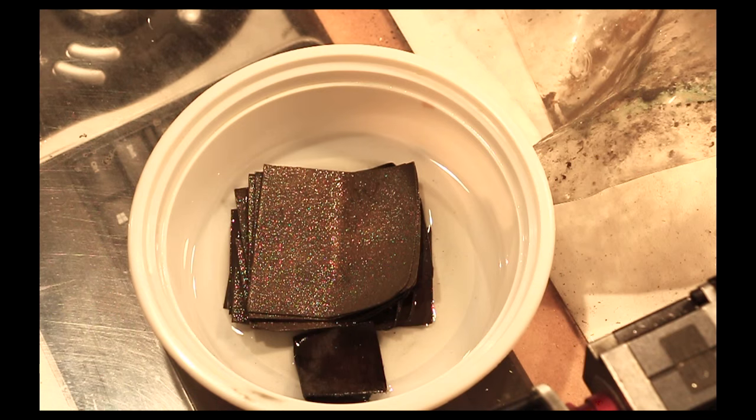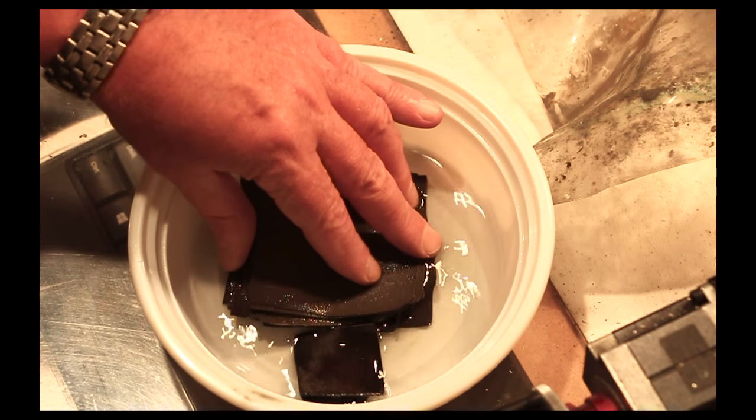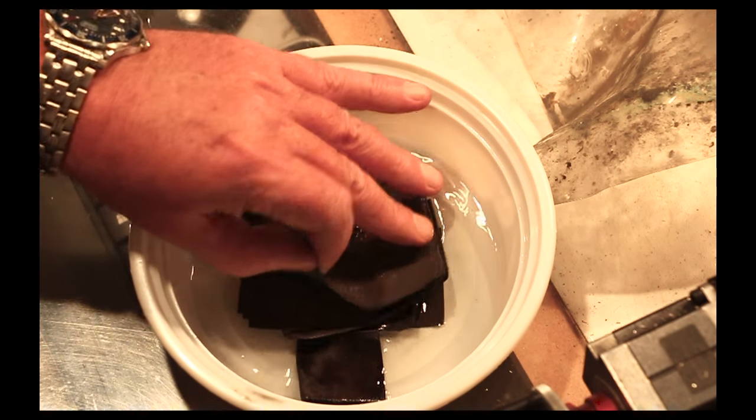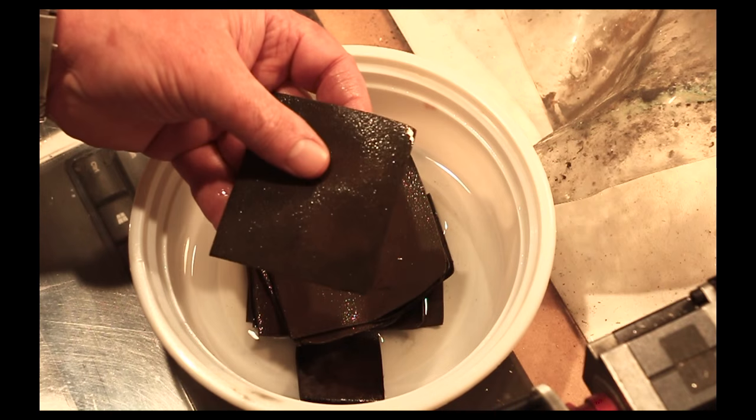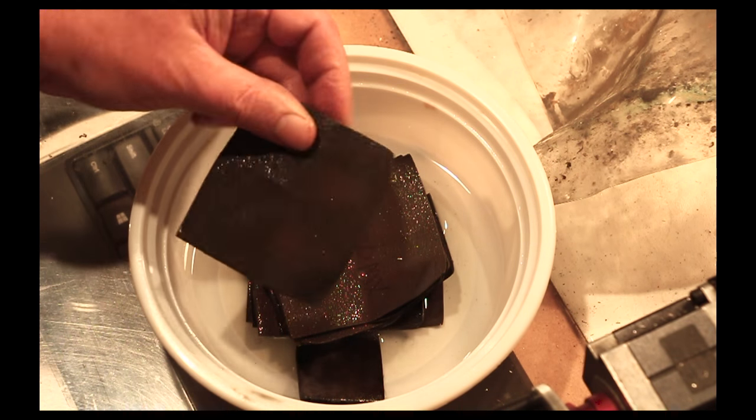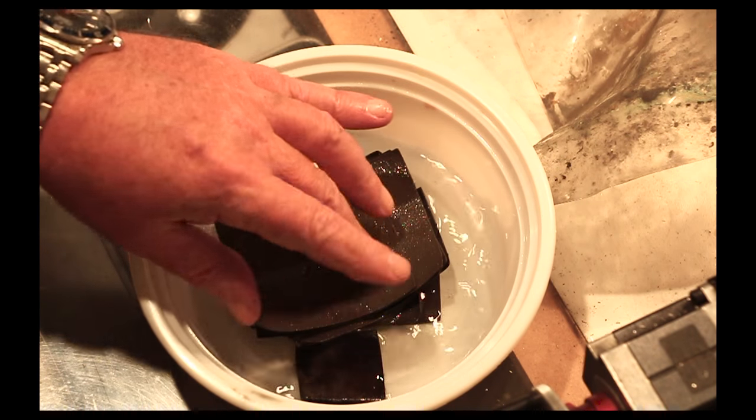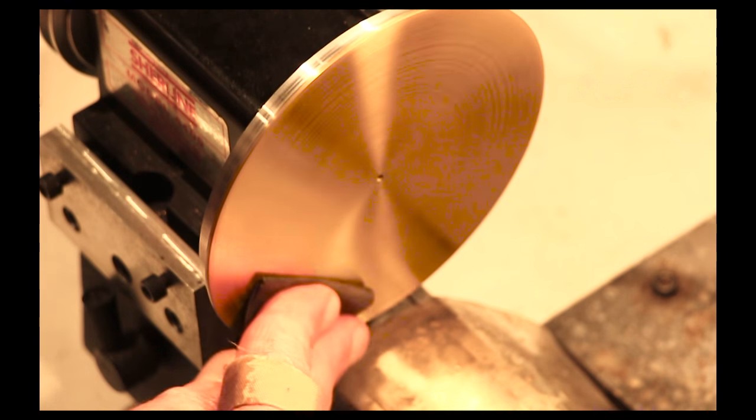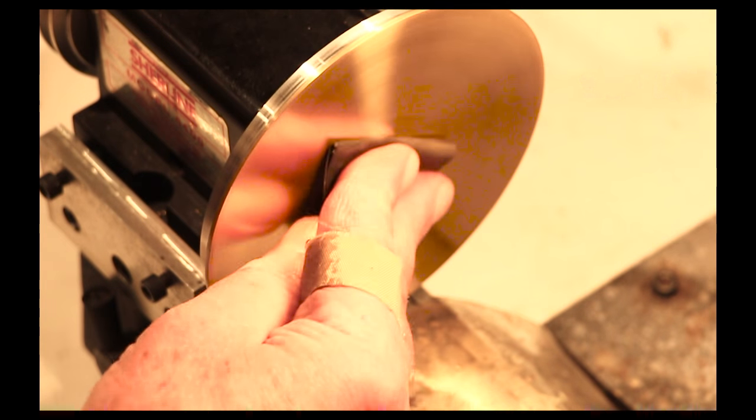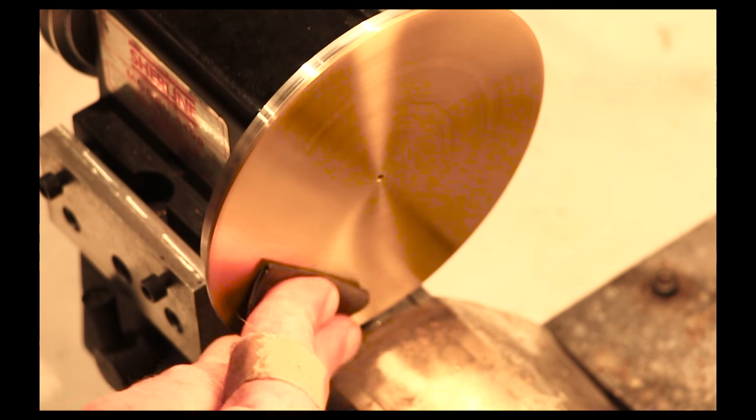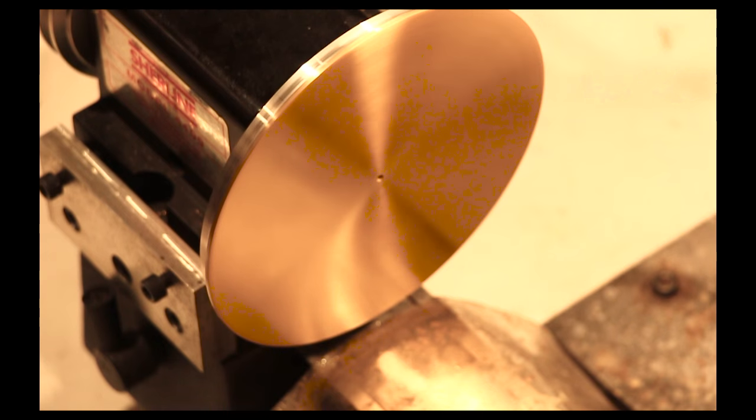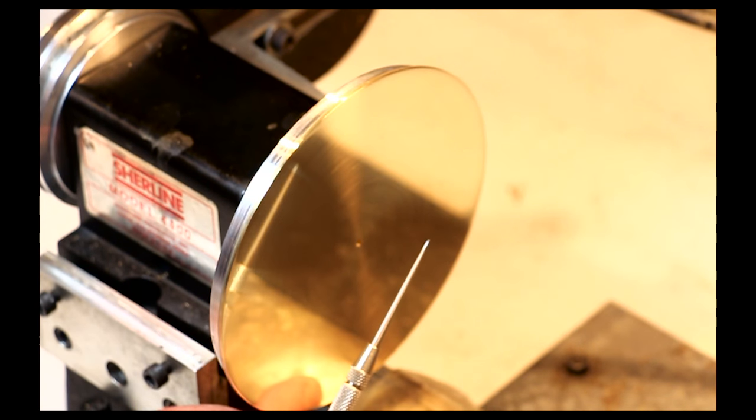The papers I use are from a company called MicroMash, and they make several different grades. The grade I use for brass is their MX grade, and I do it soaked in mineral spirits. You proceed in order through the various grits, and there are quite a few of them. And as you can see, you can get a very, very nice finish.